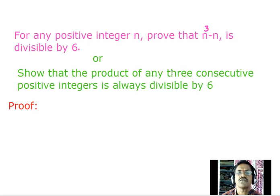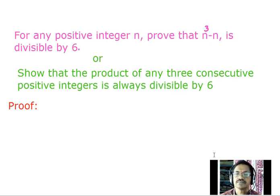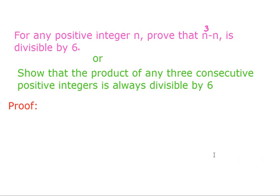Show that the product of any three consecutive positive integers is always divisible by 6. To prove these statements, both statements have the same concept, but the question is different. For that we have to take three consecutive positive integers and prove these statements.